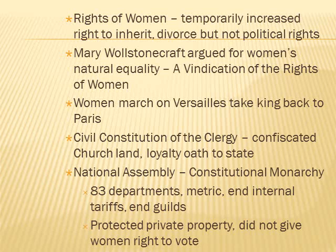Proto-feminists issued a Declaration of the Rights of Women and the Citizen. Temporarily, women had increased rights to inherit and more liberal rights to divorce, though they did not get political rights, and there was a swing back against these slight increases. Mary Wollstonecraft argued for women's natural equality in Vindication of the Rights of Women. Women marched on Versailles to take the king back to Paris. The Civil Constitution of the Clergy confiscated church land and required priests to swear a loyalty oath to the state. The National Assembly created a constitutional monarchy, eliminated old provinces and set up 83 departments, established the metric system, ended internal tariffs and guilds.